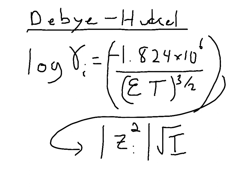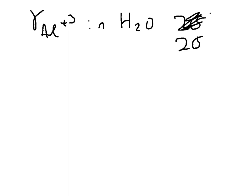And we'll do that. And so let's just show that in the next slide. So let's do a quick example. Let's ask what would be gamma for aluminum plus 3 in water 25 degrees C.